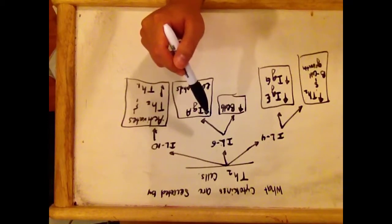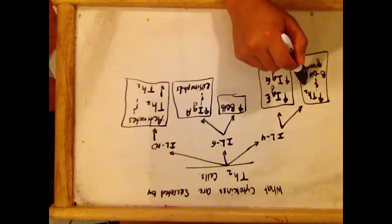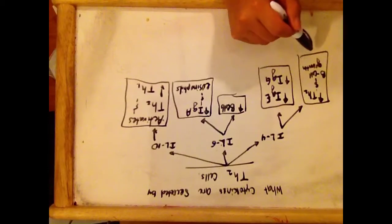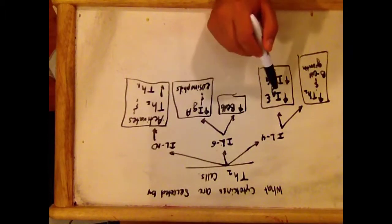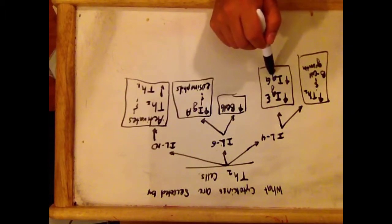Interleukin-4 induces the differentiation into T helper 2 cells and it promotes the growth of B cells. It enhances the class switching of immunoglobulin E and immunoglobulin G.